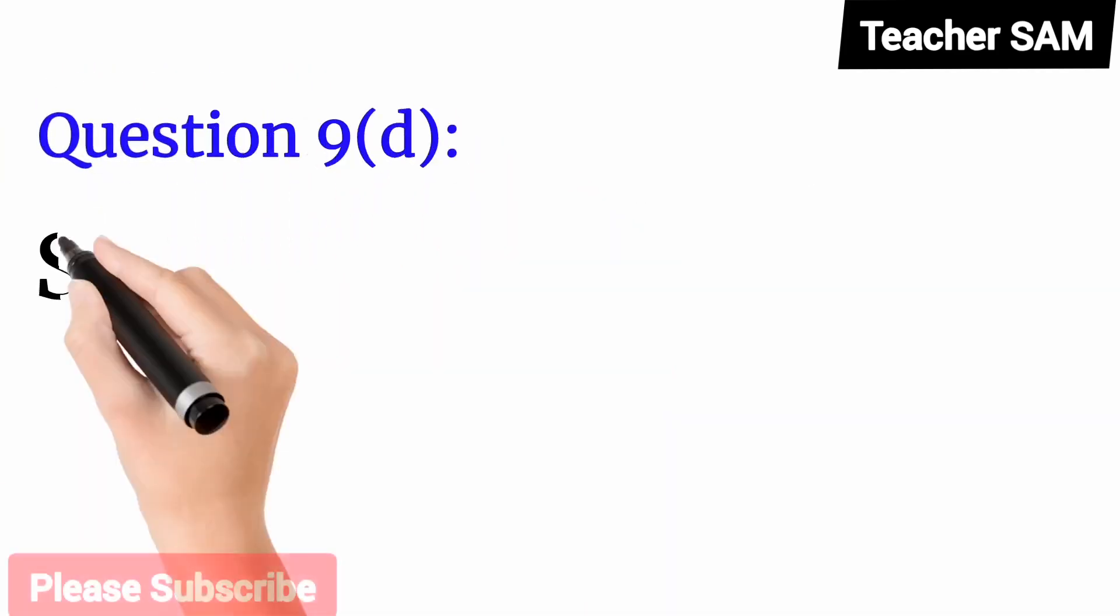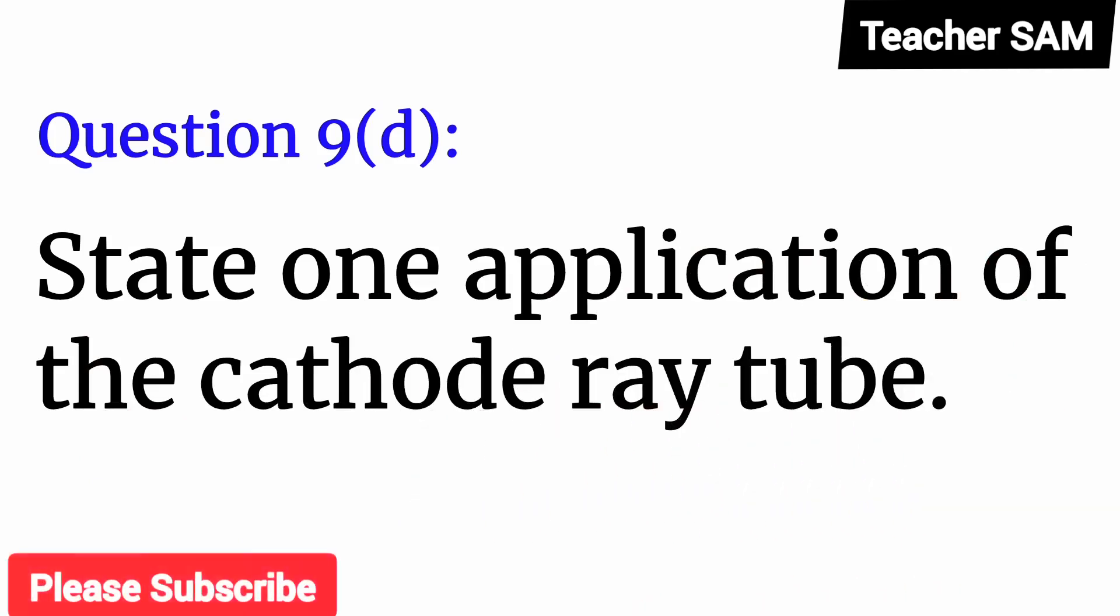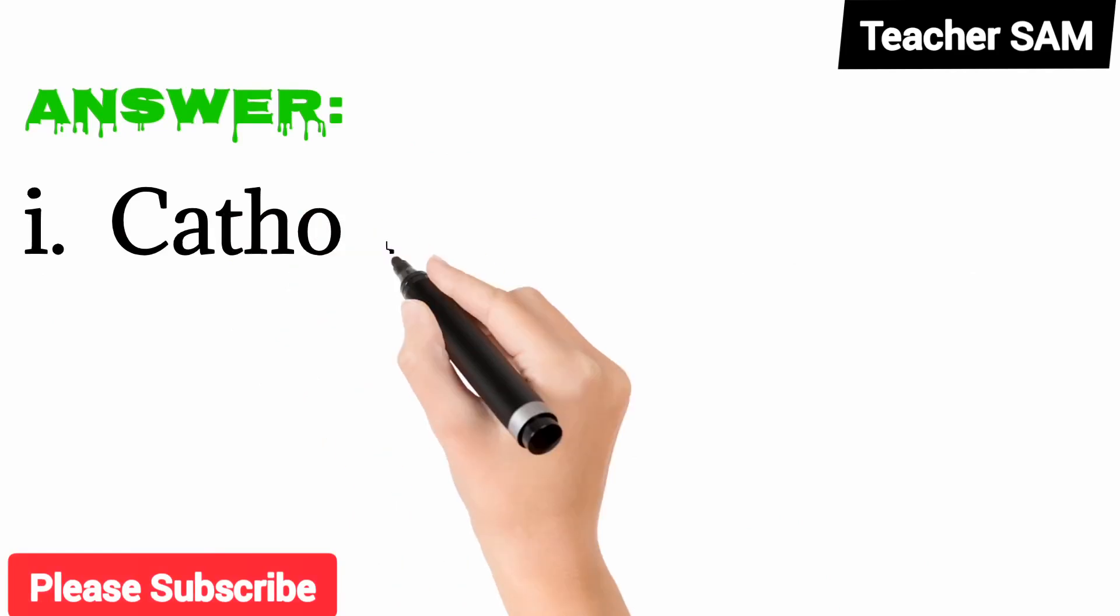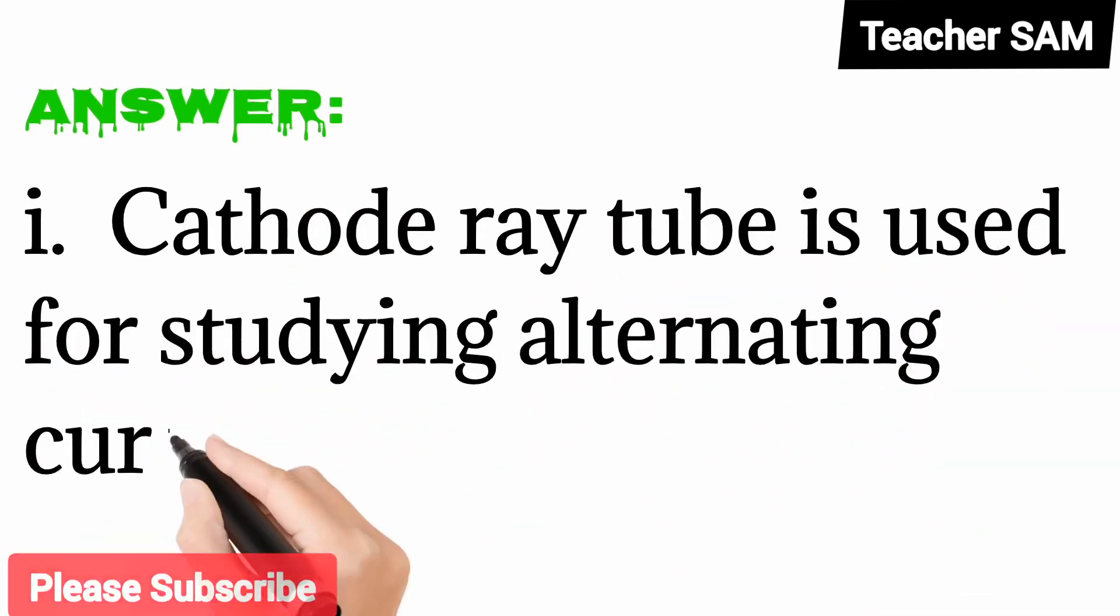Question 9D: State one application of the cathode ray tube. Answer: 1. Cathode ray tube is used for studying alternating current waveform.